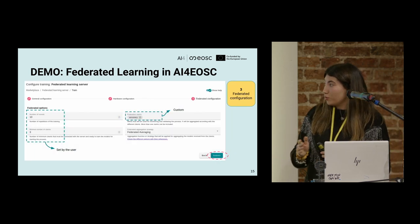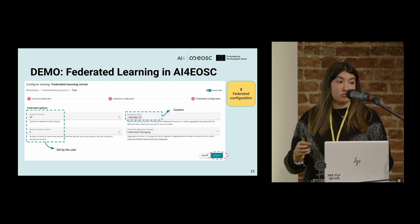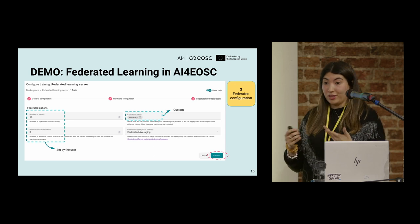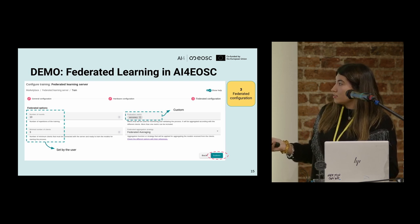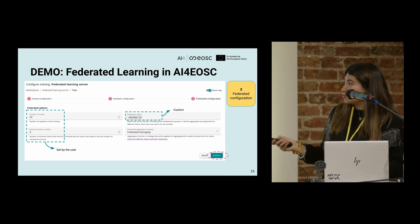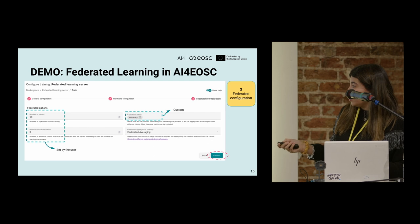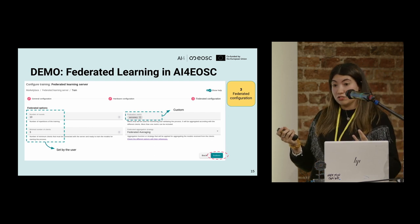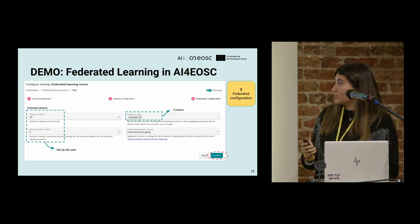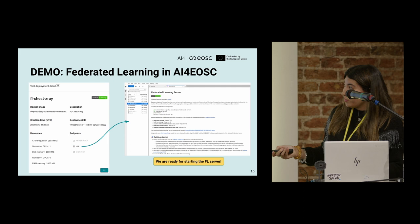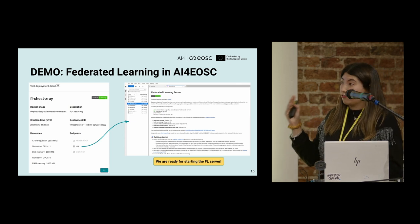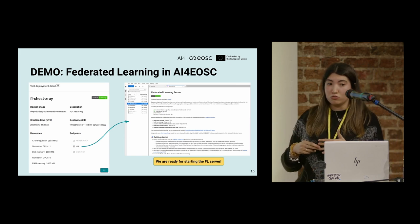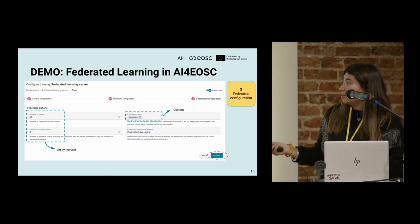The last step is the most important one because here users do not need to interact directly with Flower or any code. The user just needs to introduce the number of rounds of the federated learning training, the minimum number of clients, the evaluation metric they want to use — more than one if needed — and the federated aggregation strategy, selecting between different aggregation strategies. Then we get our deployment running, and we can start the server simply by running 'python3 fed_server server.py'. Our federated learning server is running and fully configured with these parameters, without needing to change anything in the code.